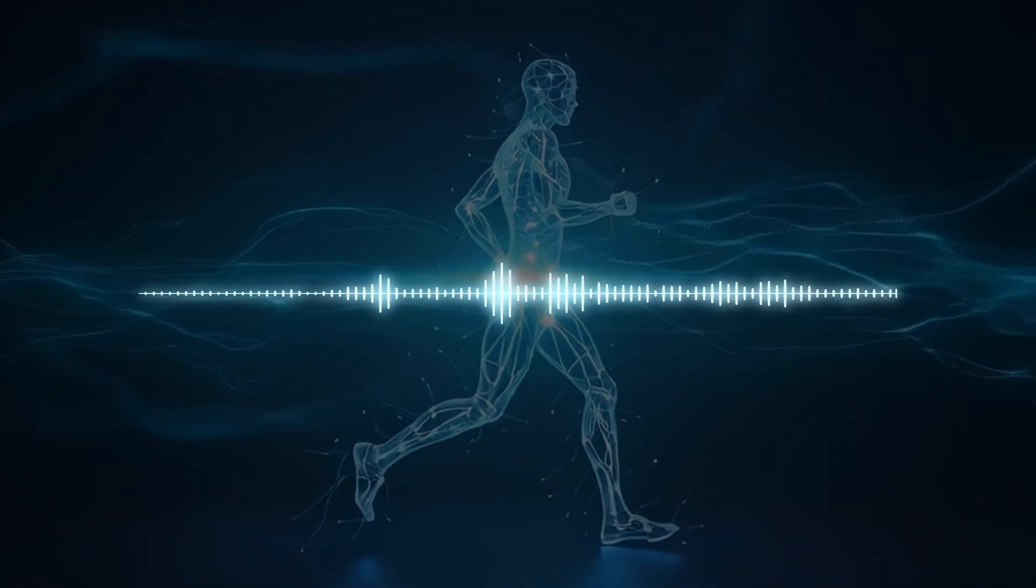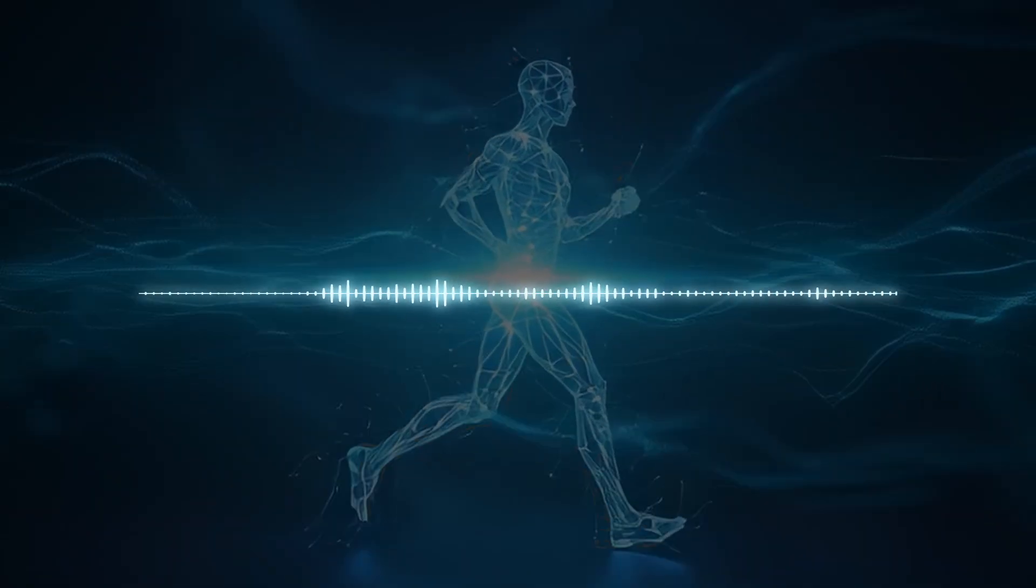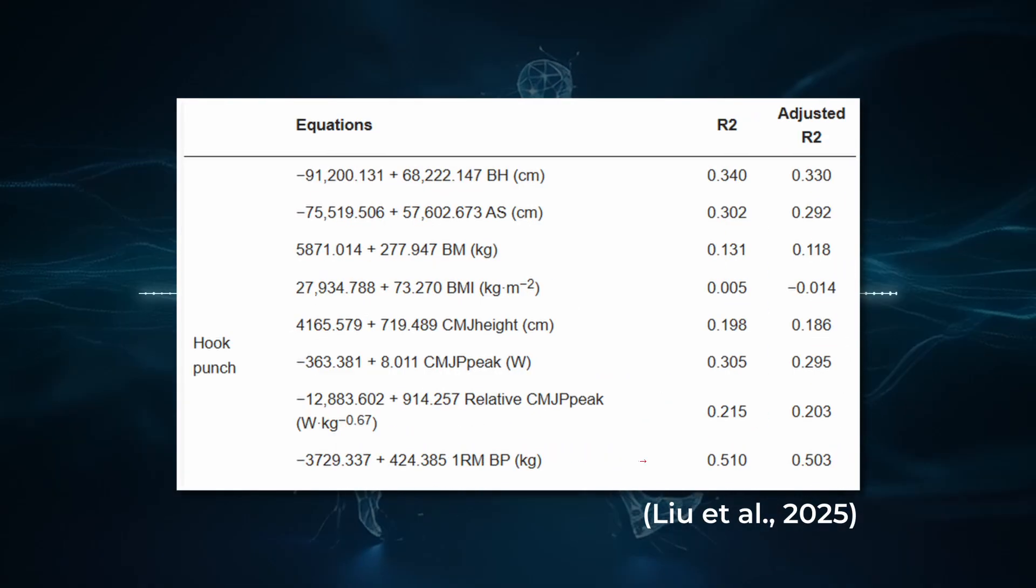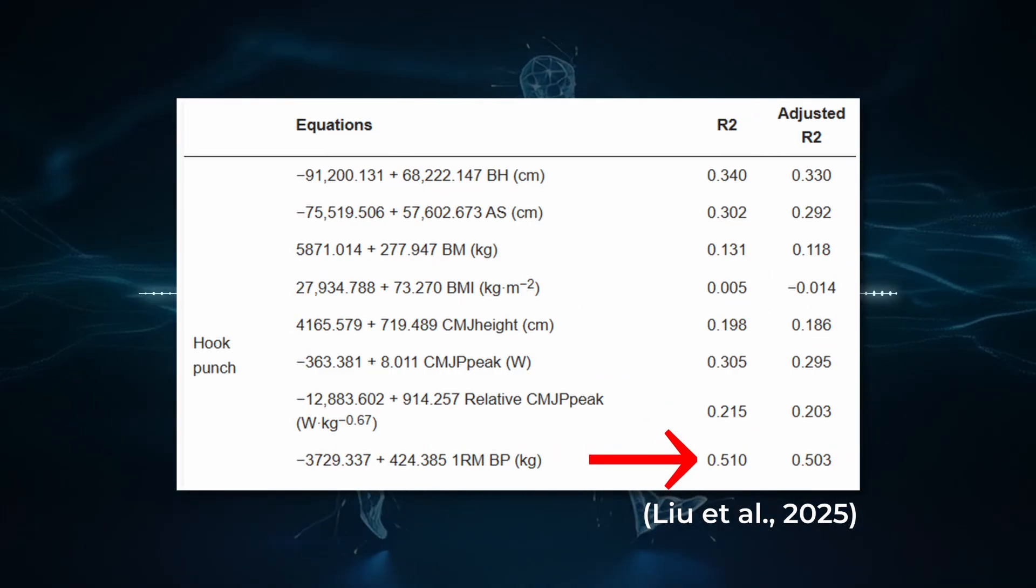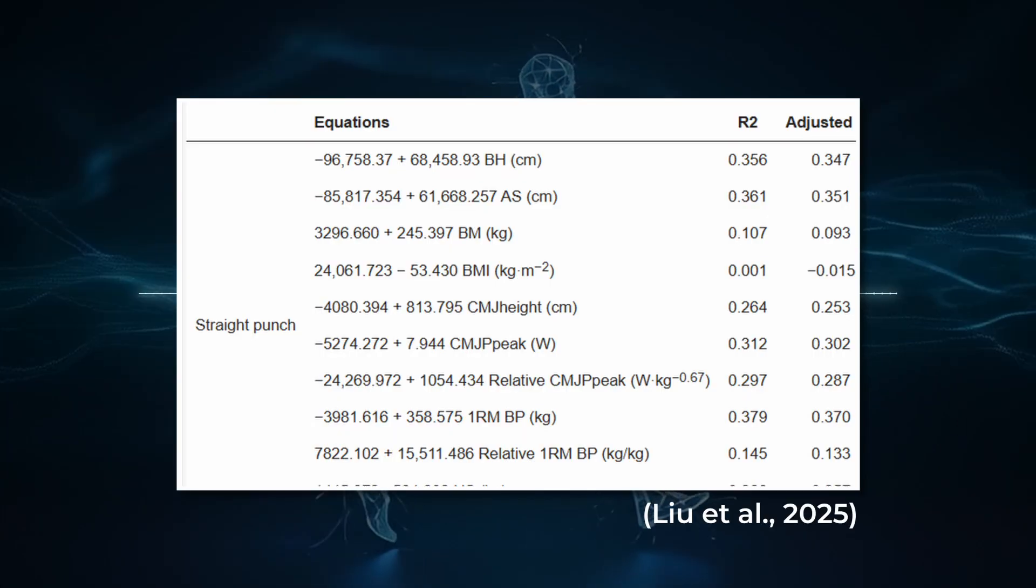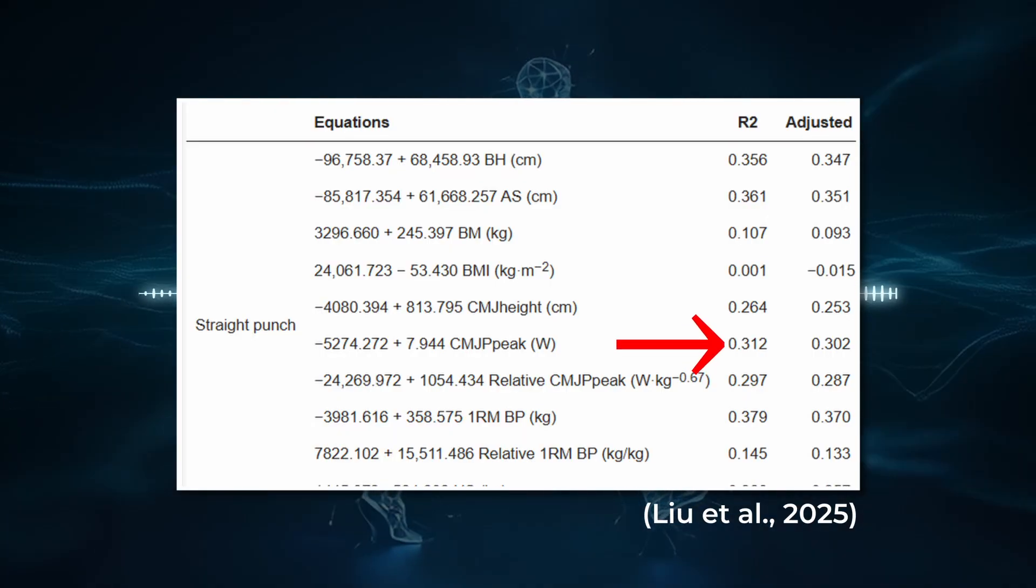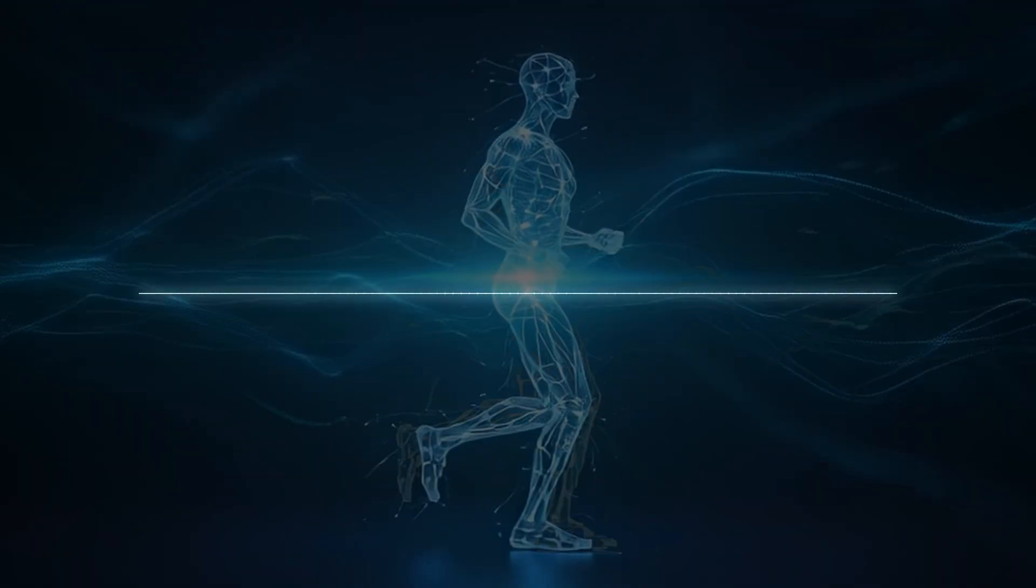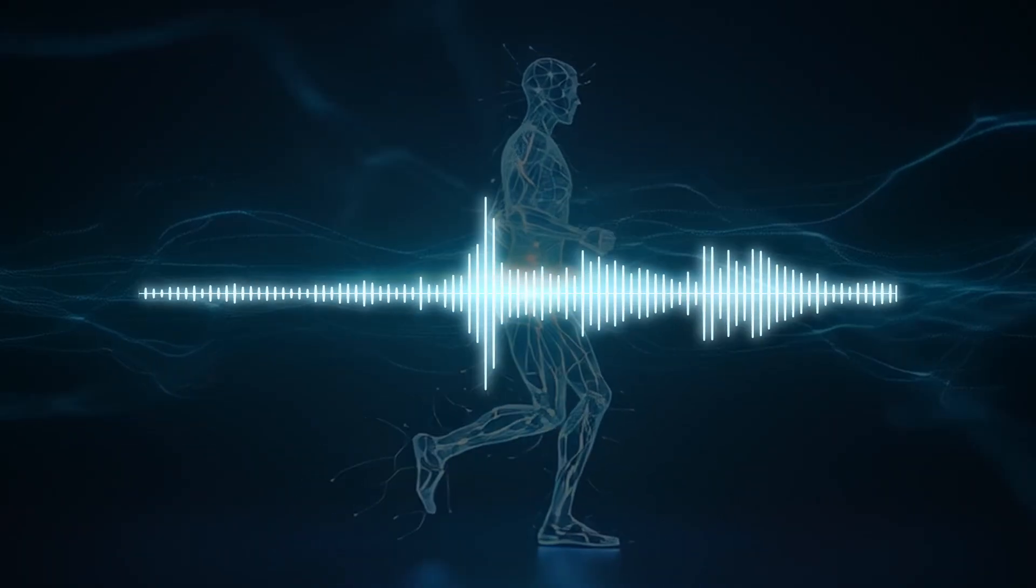Among the strength and power tests, bench press absolutely dominated, explaining 38% of straight punch variance and an incredible 51% of hook punch variance. Counter movement jump performance, your explosive leg power, explained 31% of straight punch variance. Supporting the kinetic chain theory that power starts from the ground up.